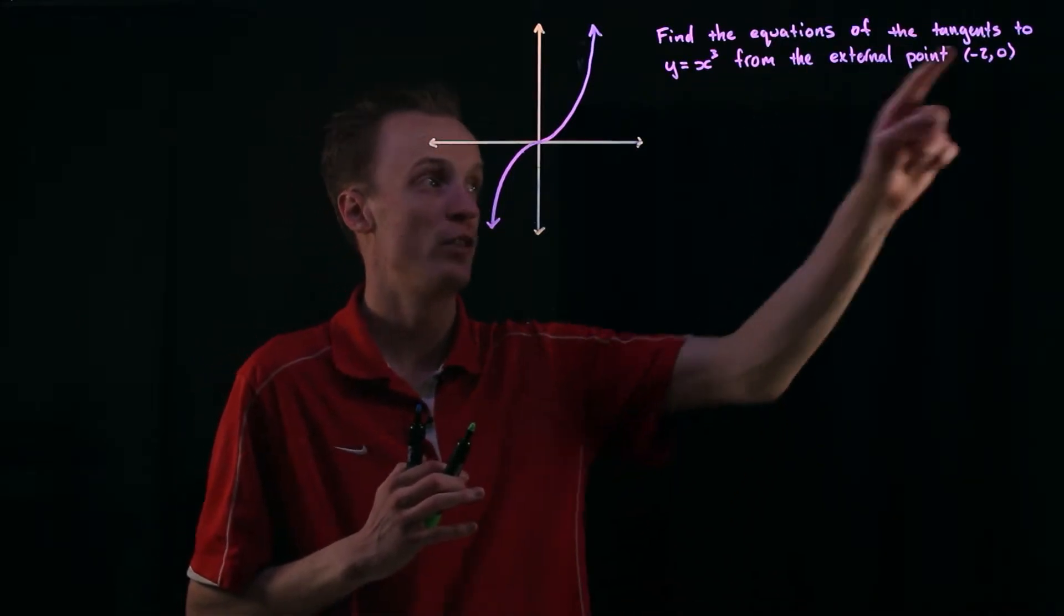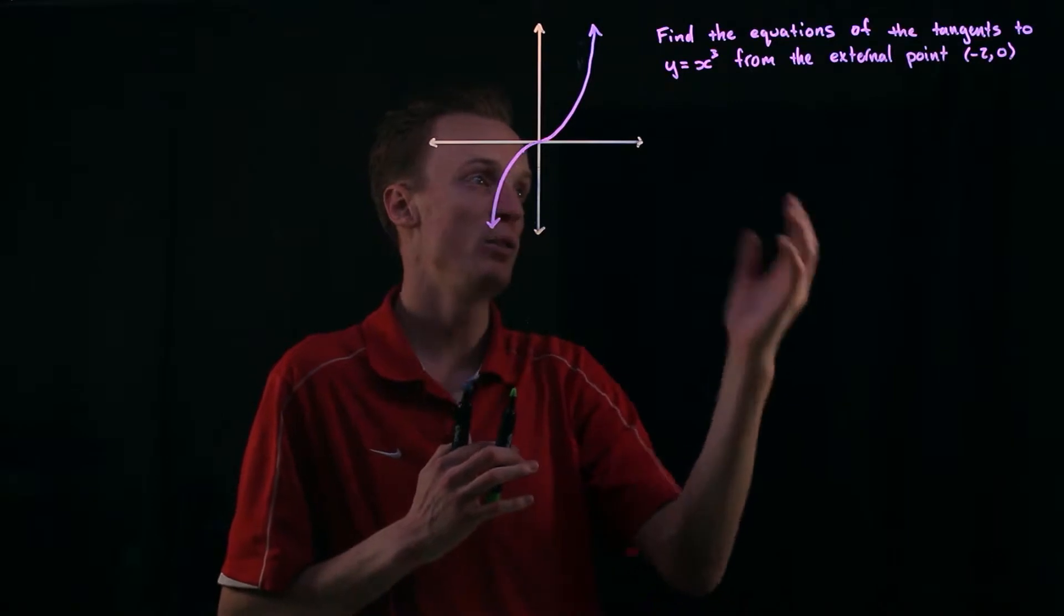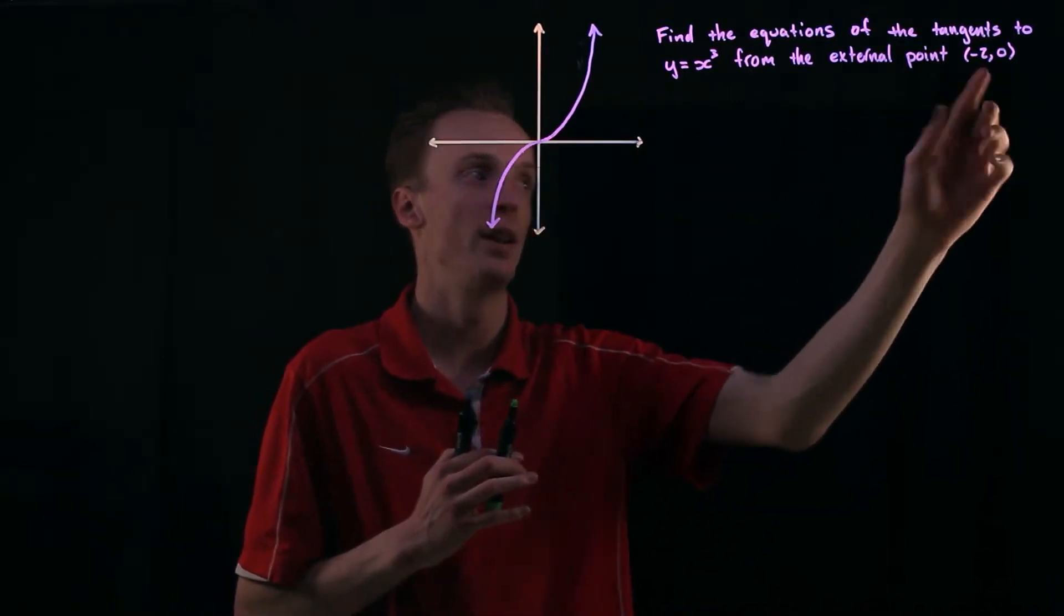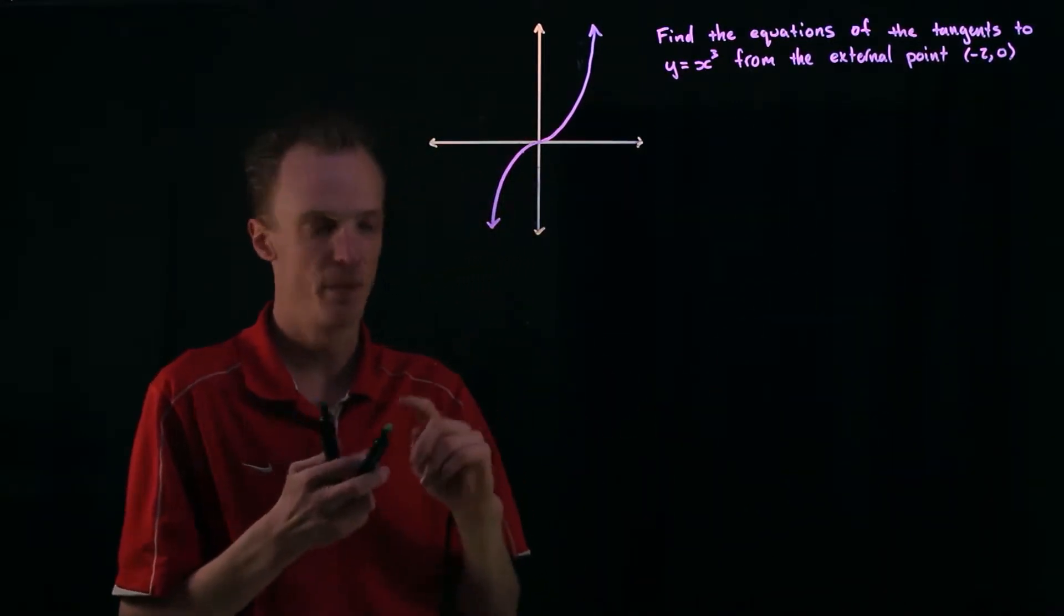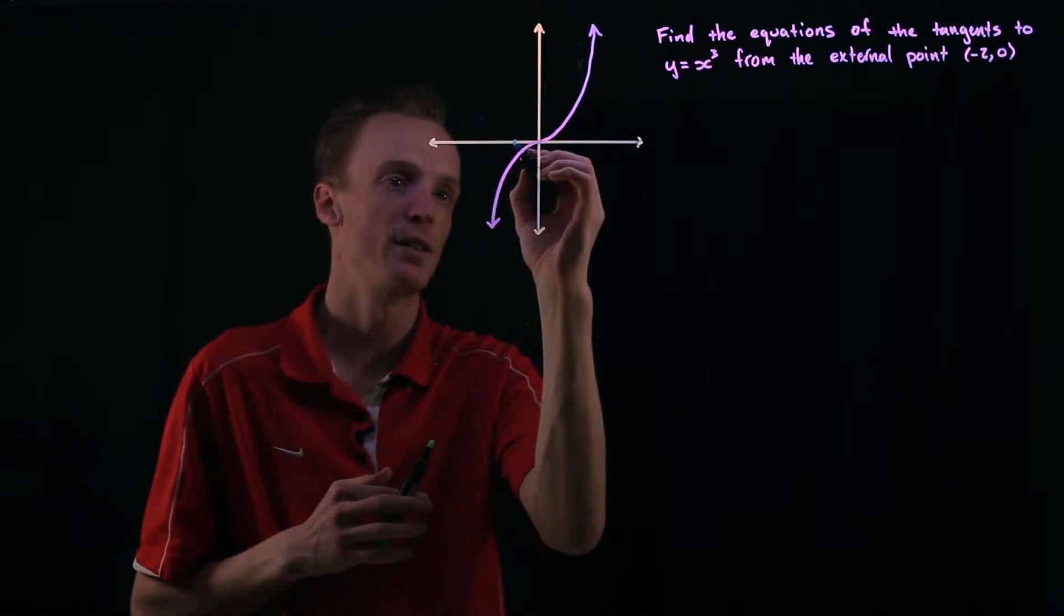We want to find where the tangents, notice that it's plural here, the tangents to this equation from this external point negative 2, 0. Now the point negative 2, 0 is probably about here somewhere.